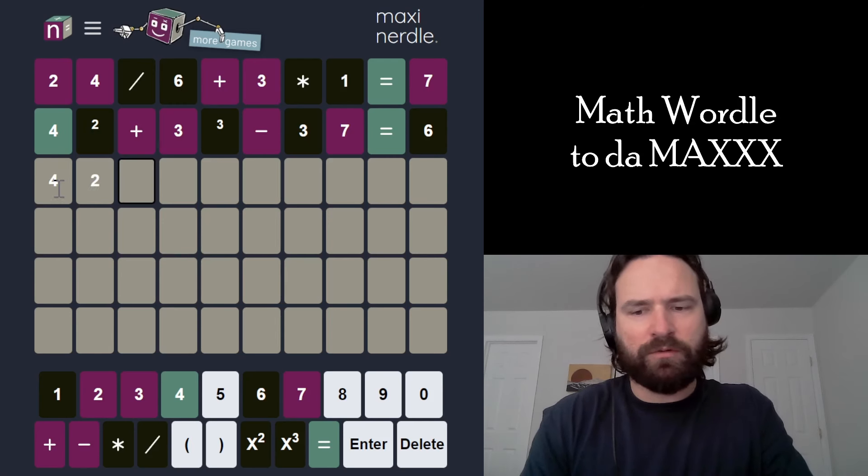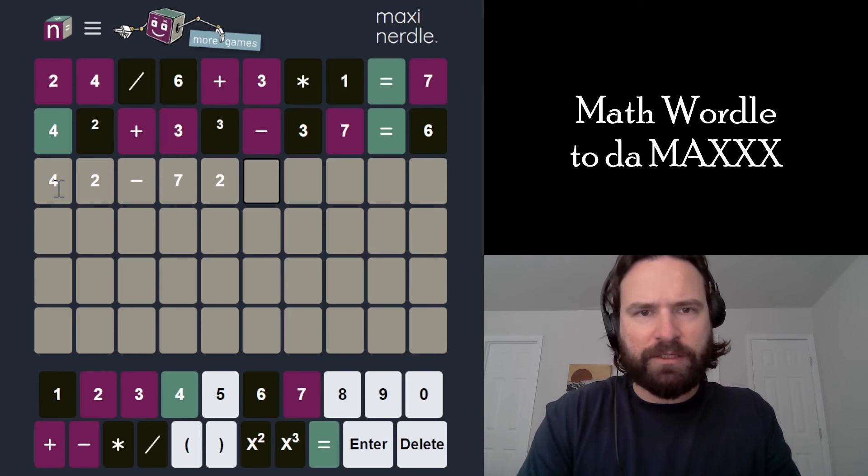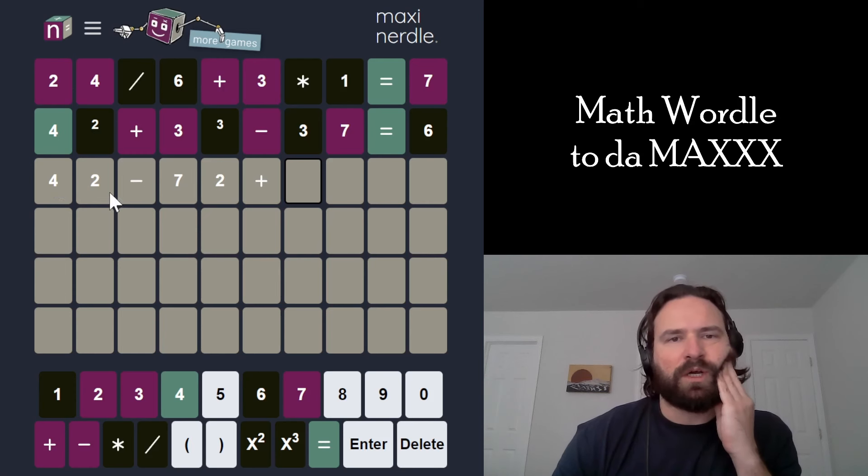So if I did 42 minus 70, there weren't two 3s. Maybe I'll try two 2s. And then this number is going to match. So I could just do 42 minus 72. Can't be plus 30-something though.